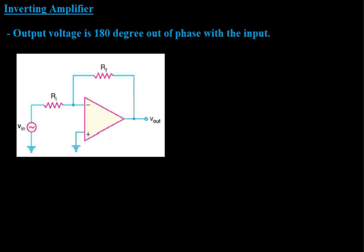First of all, we will discuss about the inverting amplifier. An inverting amplifier is nothing but an ordinary amplifier where the output voltage has a phase difference of 180 degrees with respect to the input voltage. That means an inverting amplifier is an amplifier where the output voltage is out of phase with the input voltage.